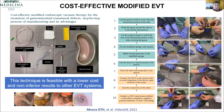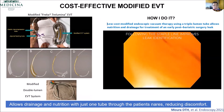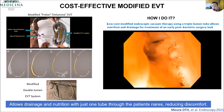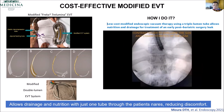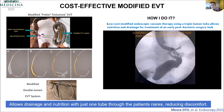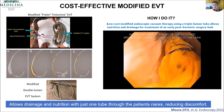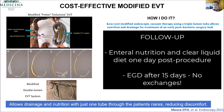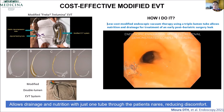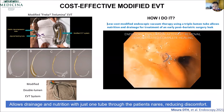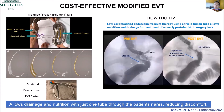We also use the modified EVT in a triple-lumen tube, which allows for nutrition and drainage simultaneously. In this case, I placed the device in the intraluminal position and left it for 15 days. The patient was receiving nutrition and drinking a clear oral diet. After 15 days, at control endoscopy, it was completely closed, so I just removed the EVT. More interestingly, as you'll see in the video, the EVT makes the angulation of the sleeve better. Maybe when you have the scar of the leak, it modifies the angle — it's really nice.